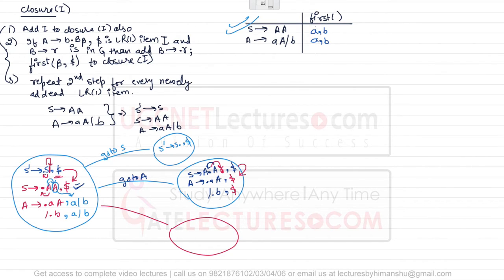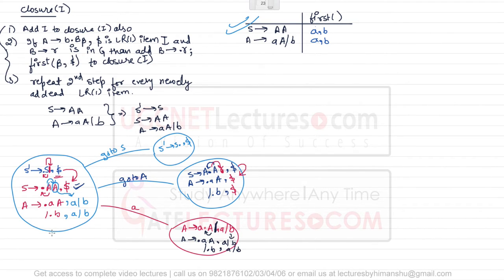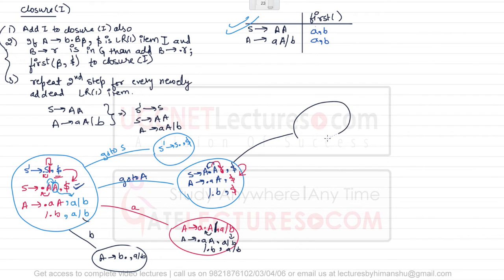From the previous state we can shift with small a to get a new state: A derives a dot A, and the same lookahead a/b is copied. After this a there are no variables, so the same lookahead is copied for other productions too. We write A derives dot AA slash dot B with lookahead a/b. For the next production with b, we get a new state by go-to(b): A derives b dot, comma a/b — the same lookahead is copied. This is a final item.